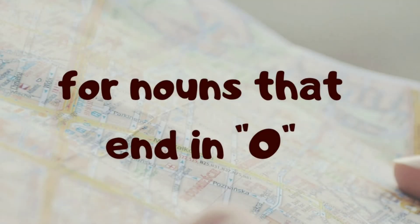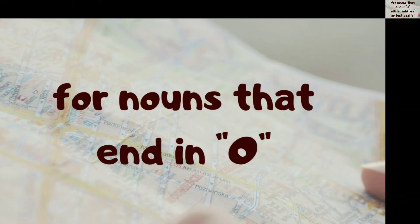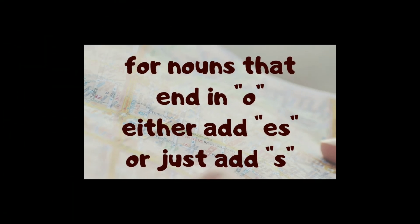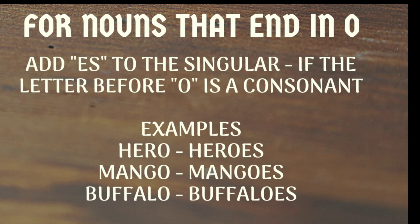Next, we will talk about nouns ending in O. If the letter before O is a consonant, we add ES. For example, hero — H-E-R-O. The letter before O is R, which is a consonant, so we add ES: heroes — H-E-R-O-E-S.